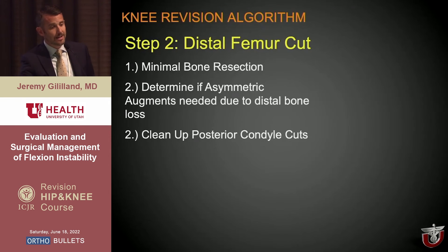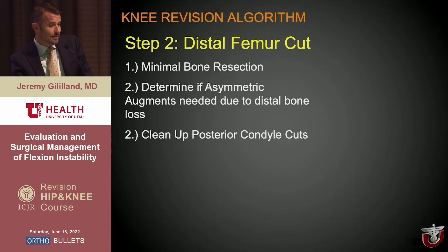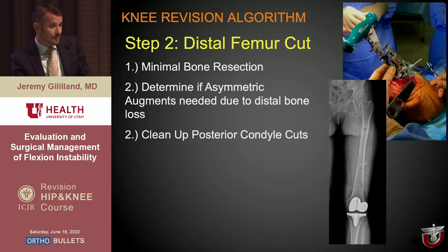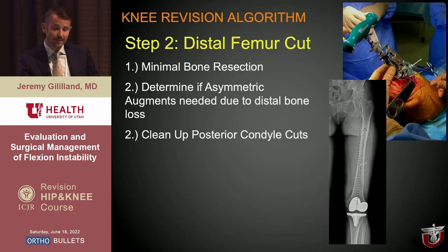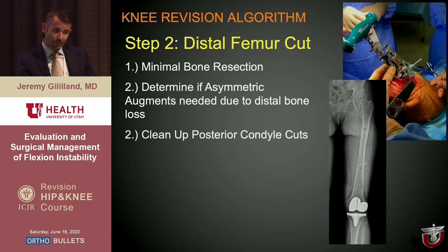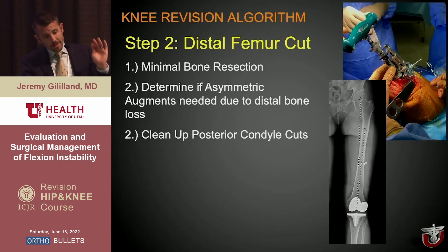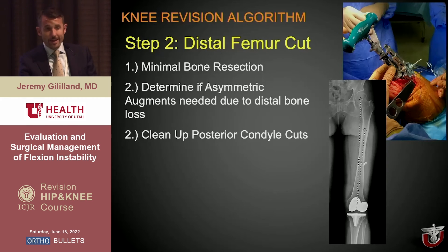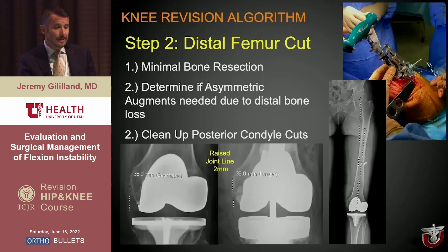On the distal femoral side, the goal is usually minimal bone resection, determining if asymmetric augments are needed based on bone loss, and cleaning up posterior condylar cuts. I template my revisions to find the difference between anatomic and mechanical axis alignment, then cut specifically to that. This patient measures four degrees while the revision components take off at six degrees, so I use the primary distal femoral cutter set at four degrees, pin it for a two-millimeter resection, trim the distal femur at four degrees, let the stem float for a short cemented stem, raising the joint line a couple of millimeters to help with the extension gap.